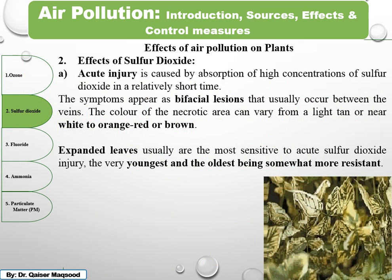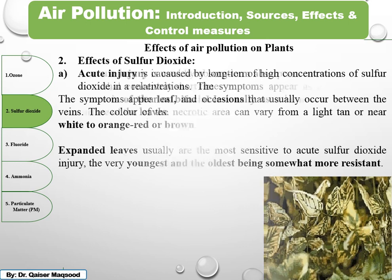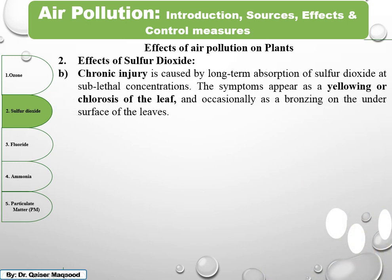The second pollutant among air pollutants is sulfur dioxide. Sulfur dioxide has two types of injury: acute injury, caused by the absorption of high concentrations of sulfur dioxide in a short time; and chronic injury, caused by long-term exposure to low concentrations of sulfur dioxide over an extended period.